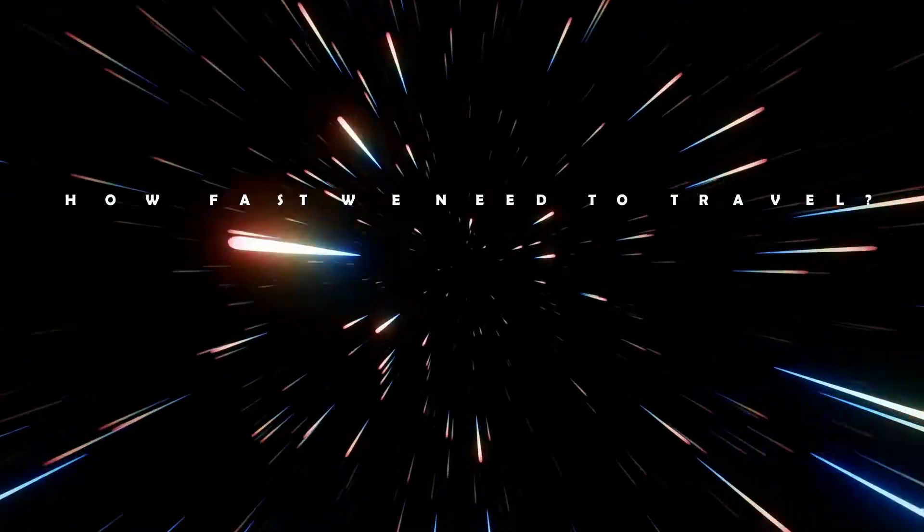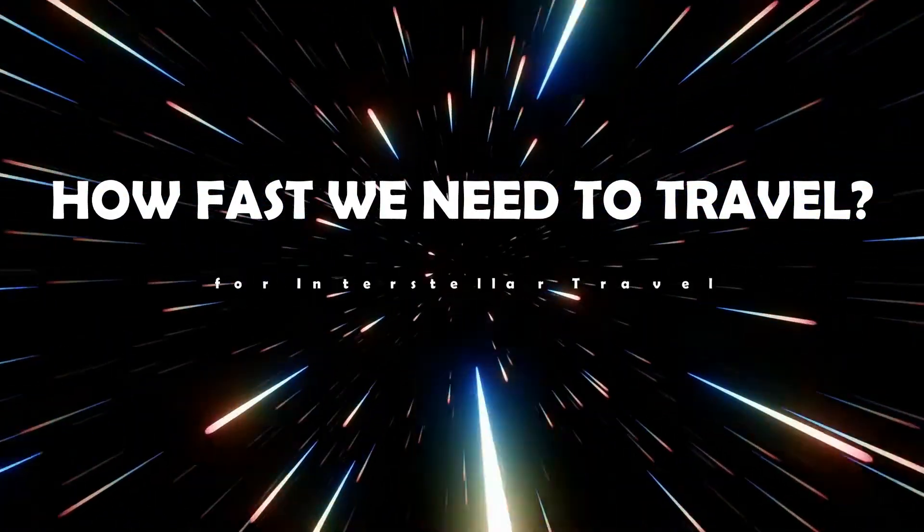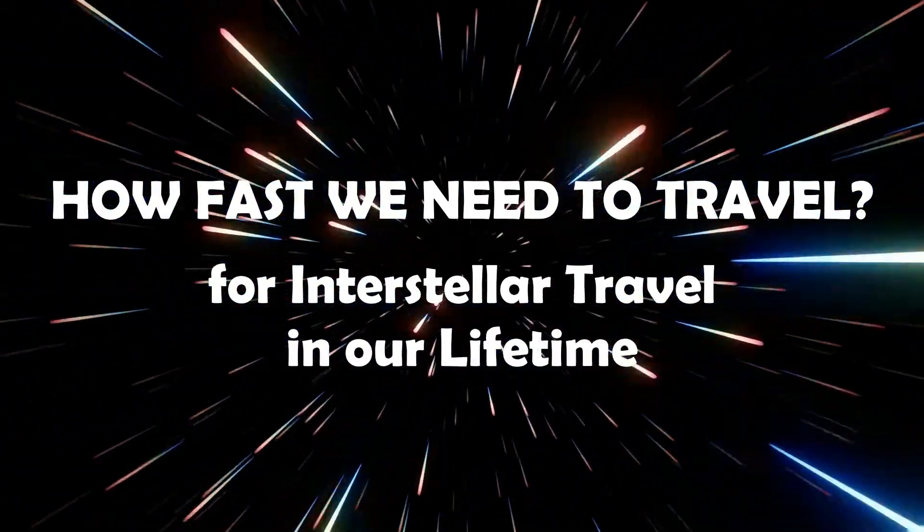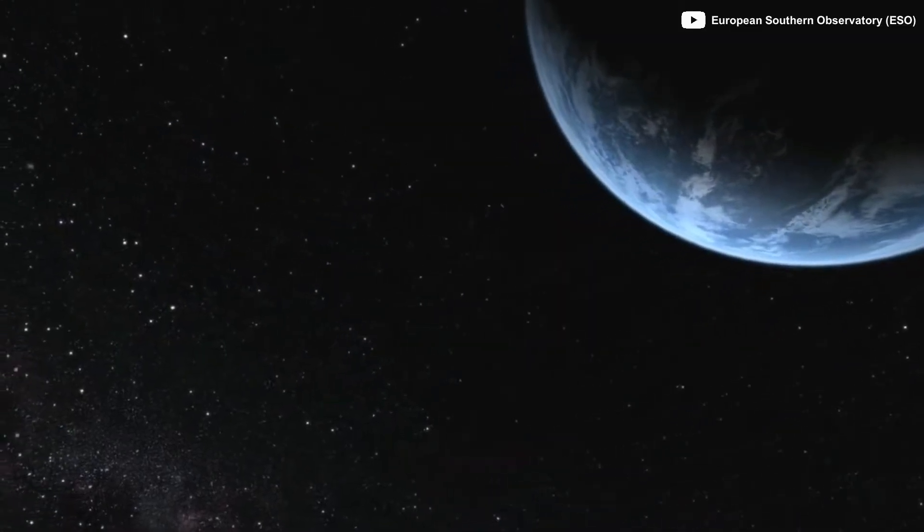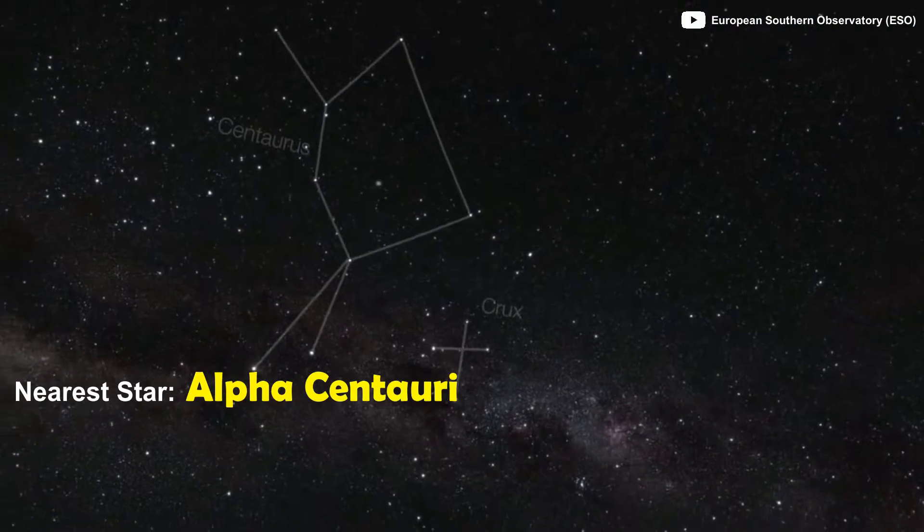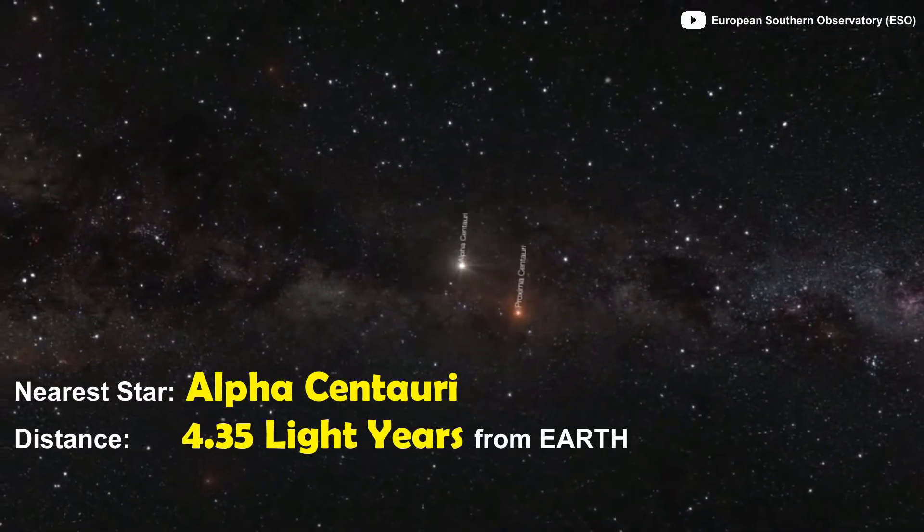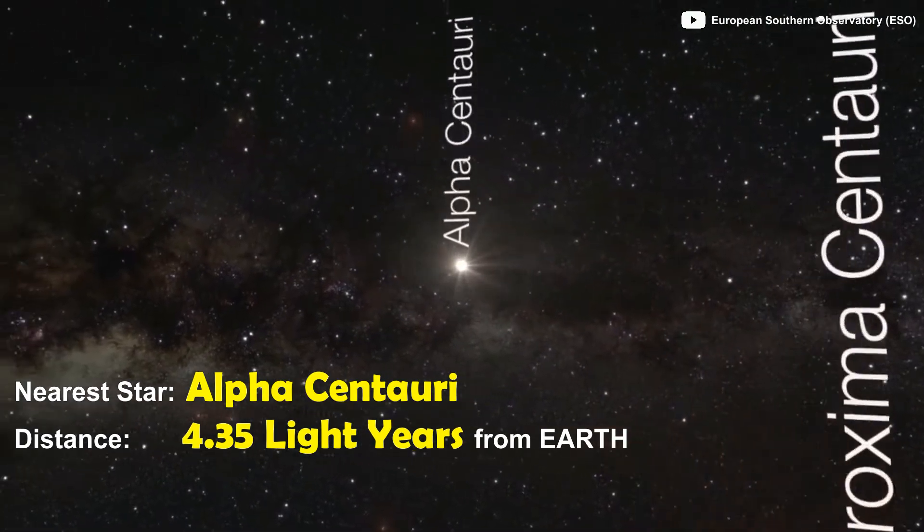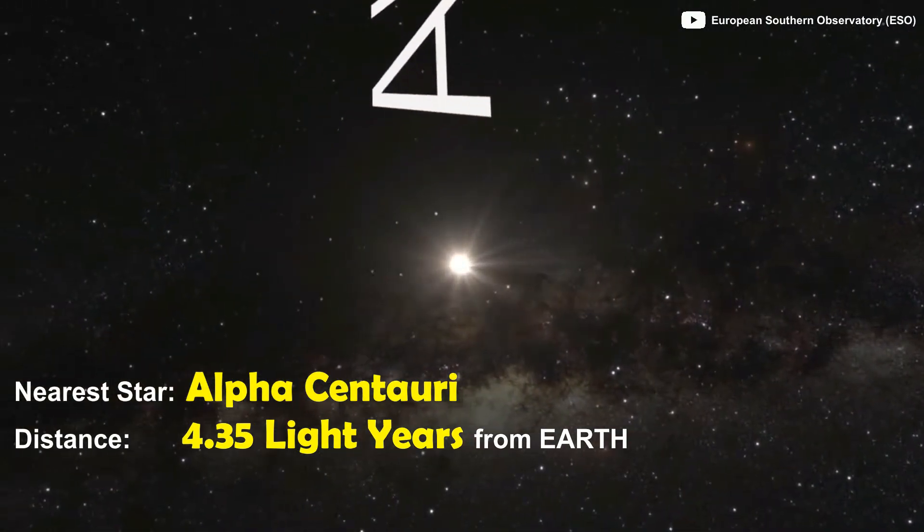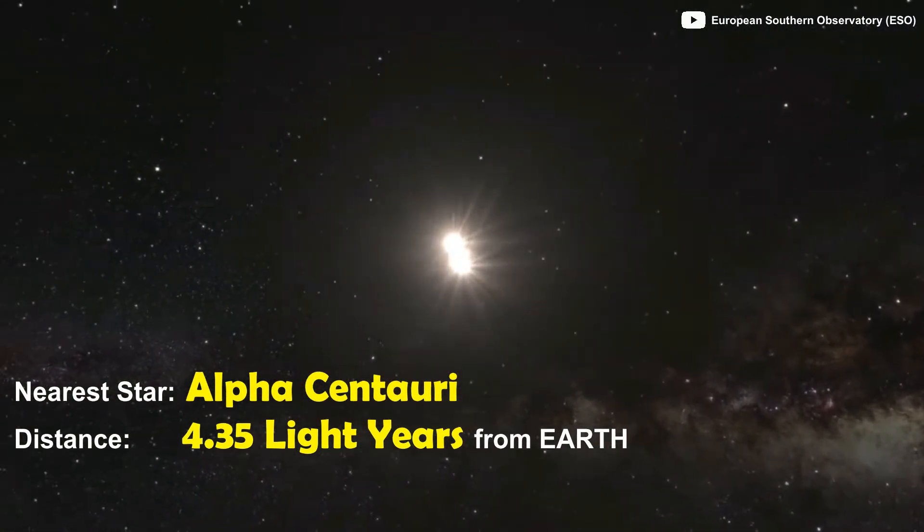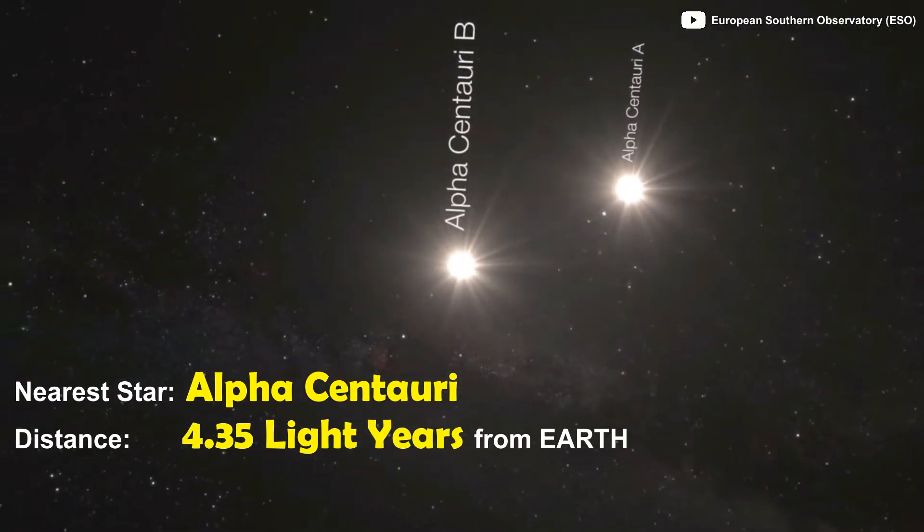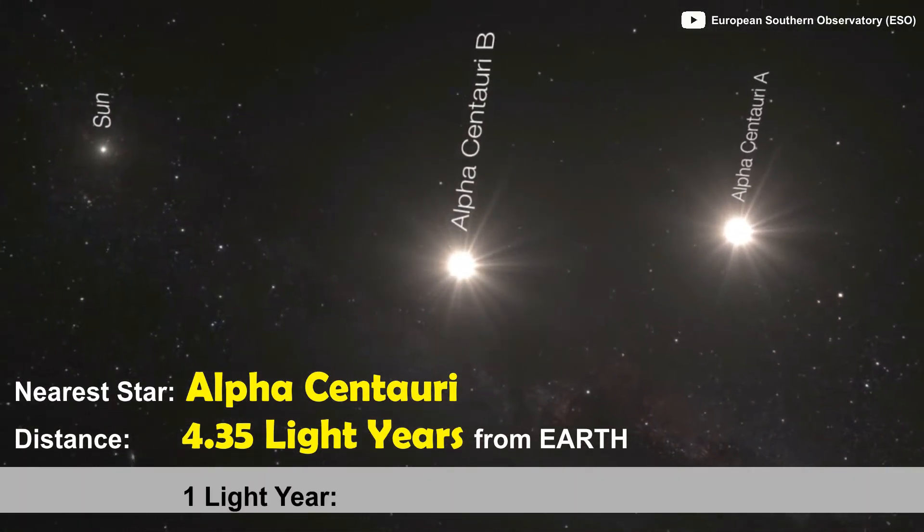First, let's take a look at how fast we need to travel to make interstellar travel possible in our lifetime. The nearest star to Earth is a triple star system called Alpha Centauri, which is approximately 4.35 light years away from Earth. The distances between the stars is usually expressed in light years, which in simple term is distance traveled at speed of light in one year.